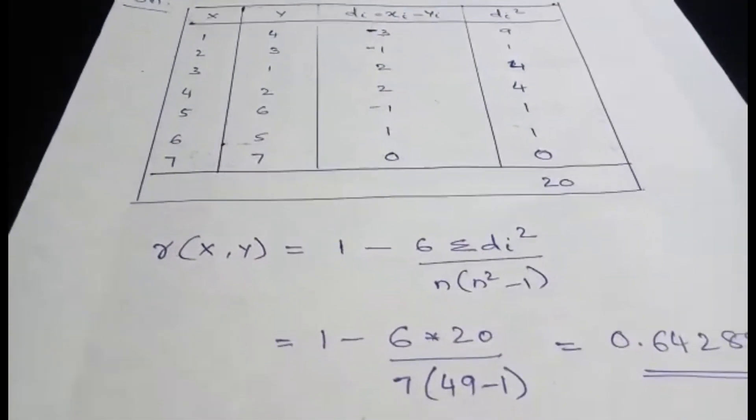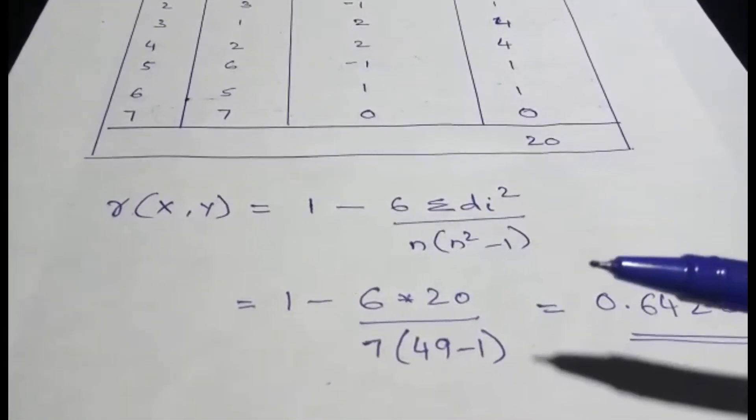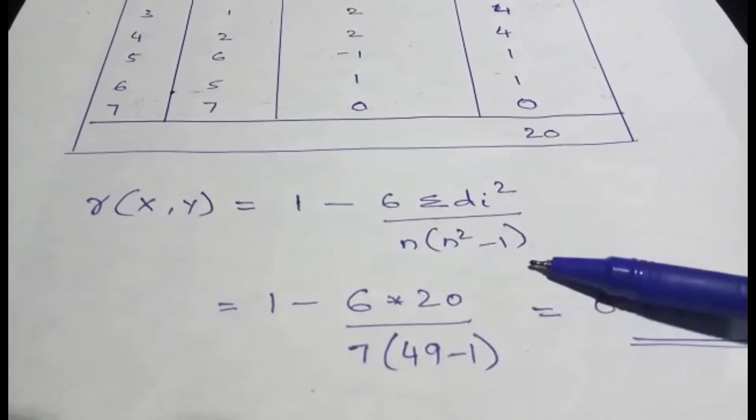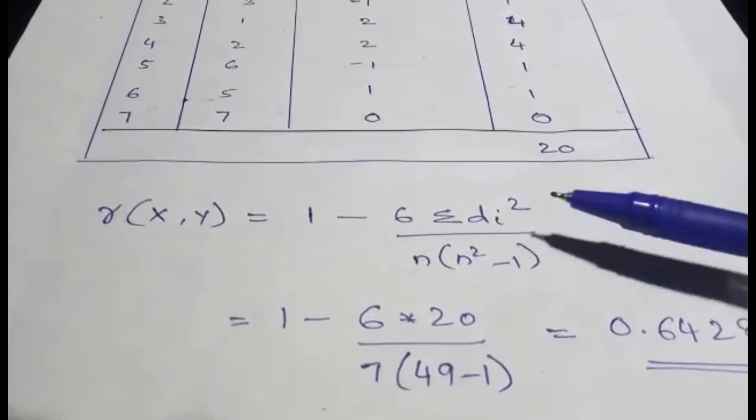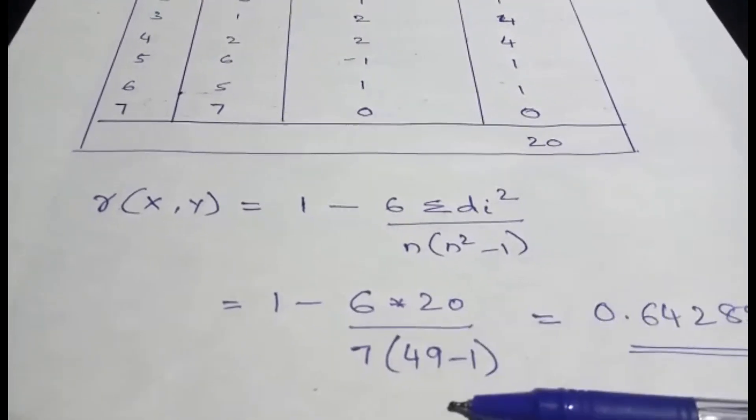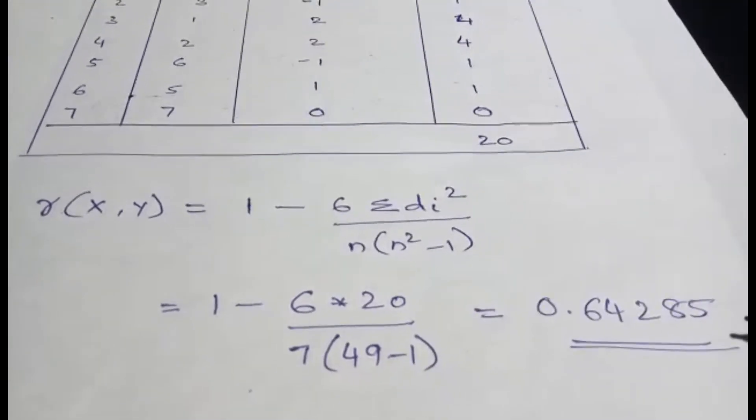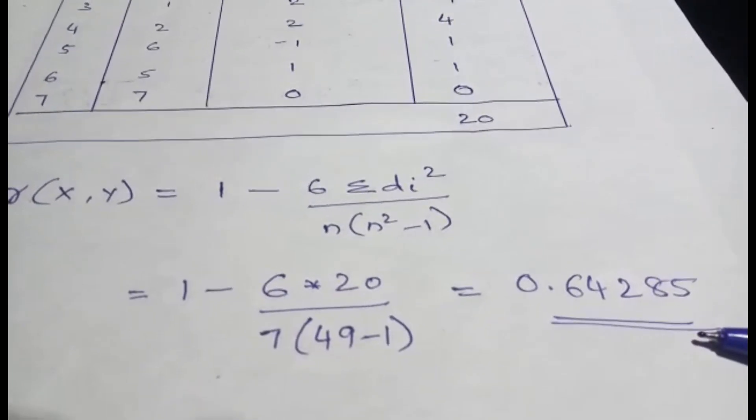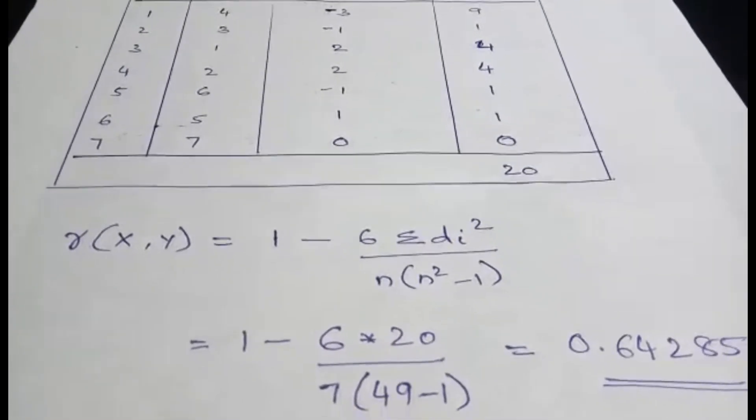Now substitute in the formula: rxy is equal to 1 minus 6 into sigma di square divided by n into n square minus 1. Sigma di square that is 20, substitute it, and n is 7. Substitute it in the formula. You will get the answer as 0.64285. So this is rank correlation.